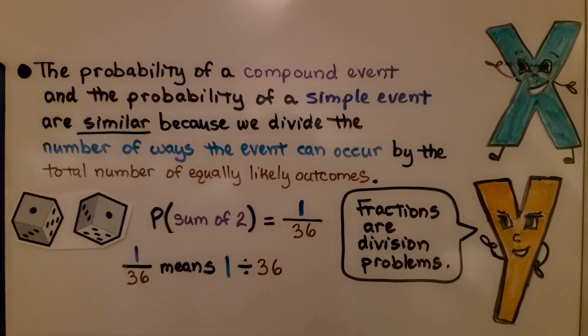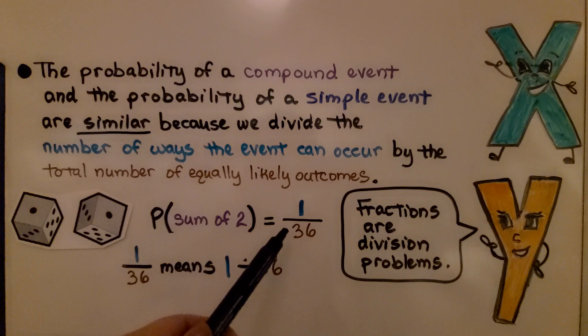The probability of a compound event and the probability of a simple event are similar, because we divide the number of ways the event can occur by the total number of equally likely outcomes. The probability for the sum of 2 was only 1/36. There was only 1 out of 36 cells.